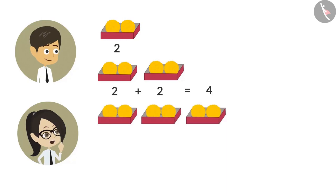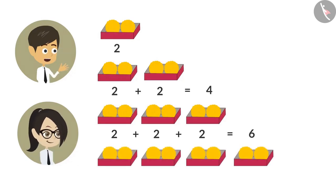To know how many laddus are there in three boxes, we have to add two three times. After adding two three times, the answer we get is six. To know the number of laddus in four boxes, we have to add two four times. After adding two four times, the answer is eight.